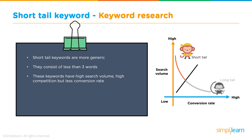The underlying issue with short tail keywords is that even if you rank and get traffic, conversions aren't necessarily going to happen because we don't know the mindset of someone typing a generic keyword like "Italian restaurants." They could be doing research, looking for recipes, a tourist searching in a different city, or someone looking near their location. Because it's so generic, the chance of conversion is lower than with a more specific, relevant keyword.